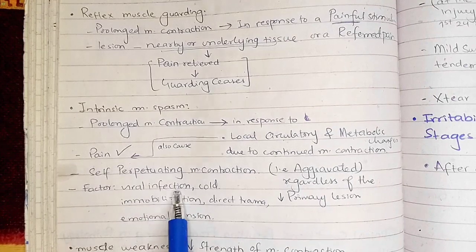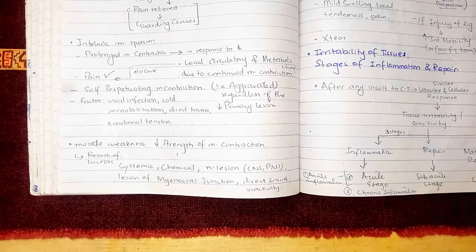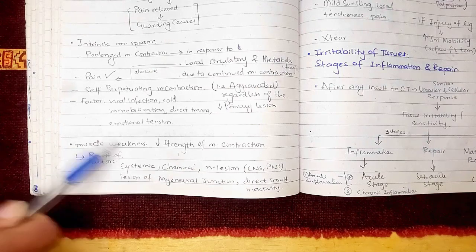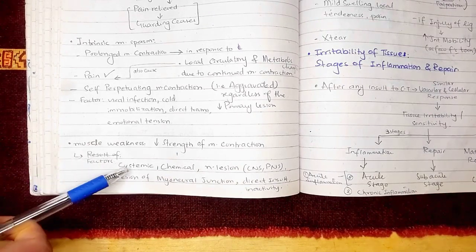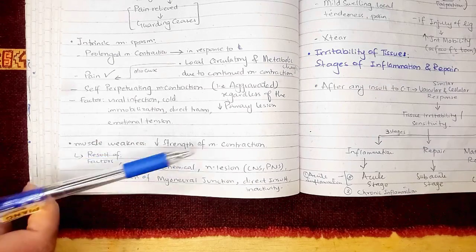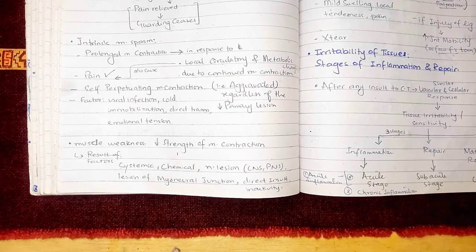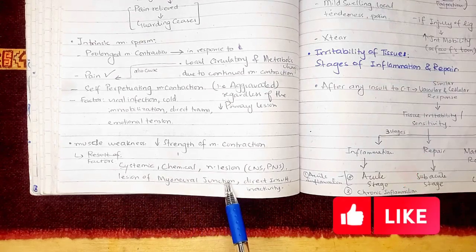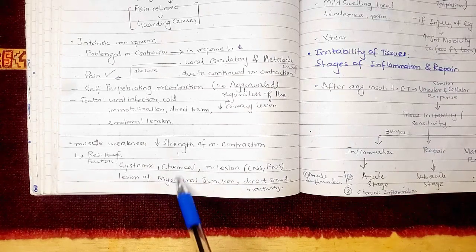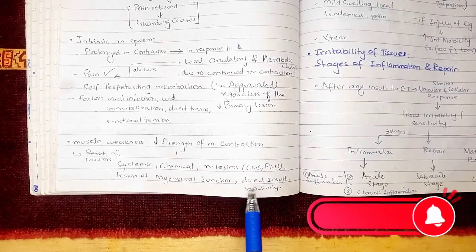The factors for intrinsic muscle spasm include viral infection, cold, immobilization, direct trauma, or emotional tension. Then we have muscle weakness, which refers to decreased strength of muscle contraction. This results from systemic or chemical factors, nerve lesions in the CNS or PNS, or lesions of the myoneural junction — where muscles and neurons coordinate to cause contraction. Direct injury and inactivity can also result in muscle weakness.